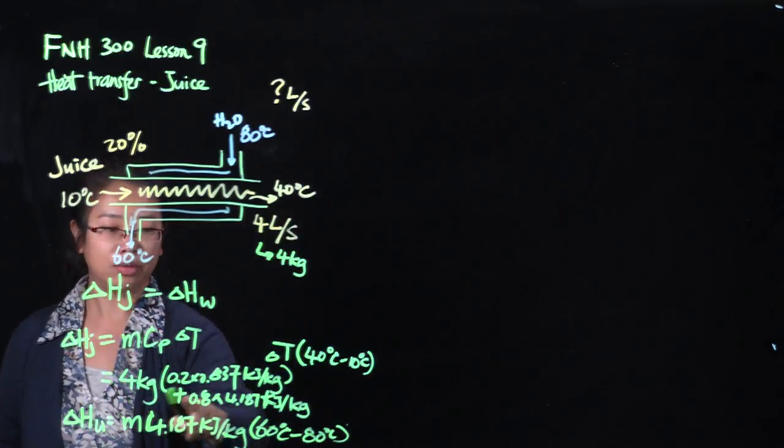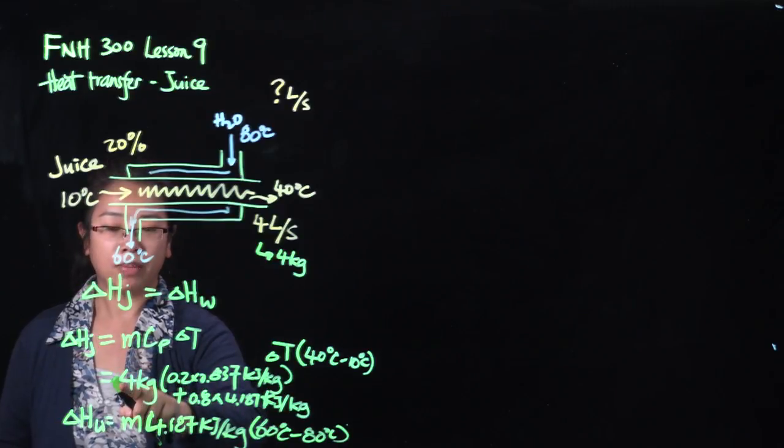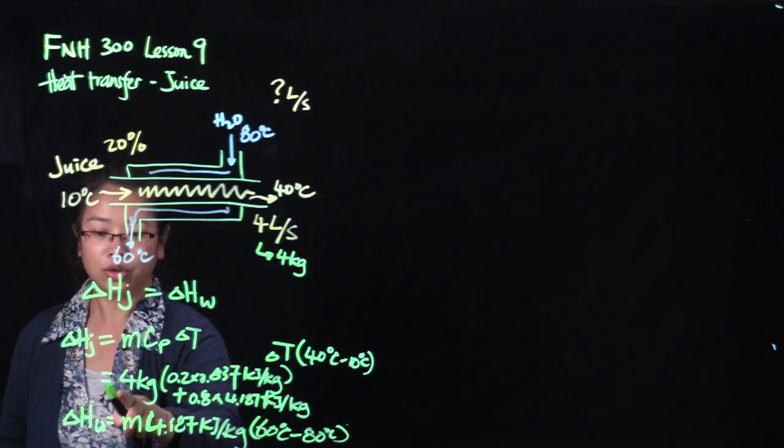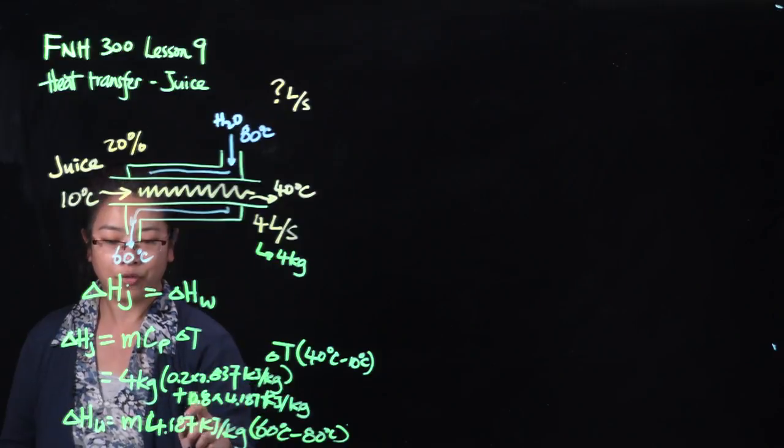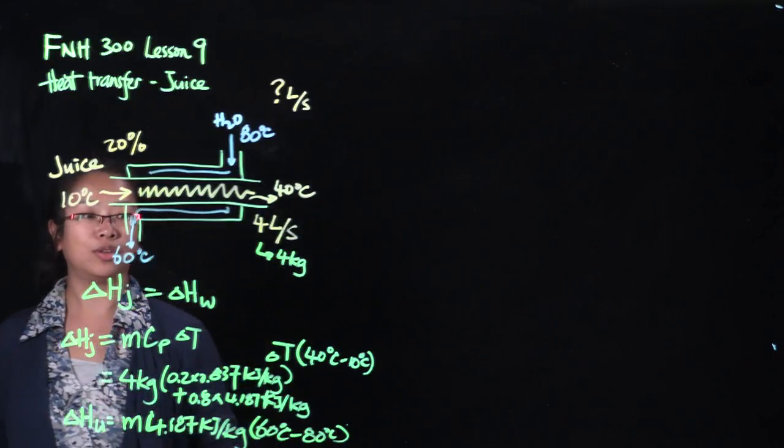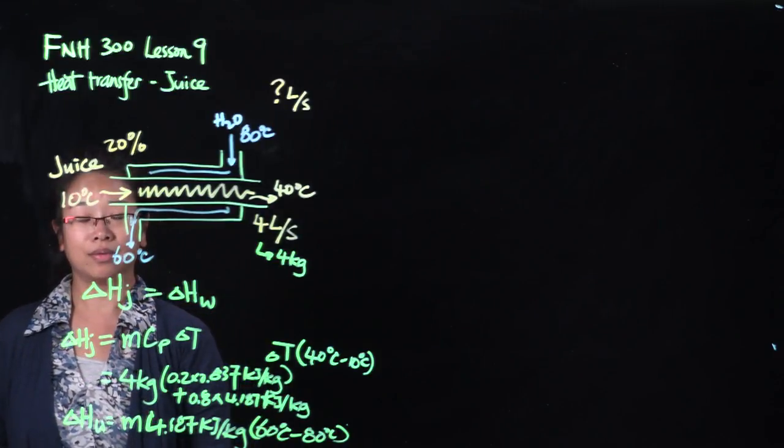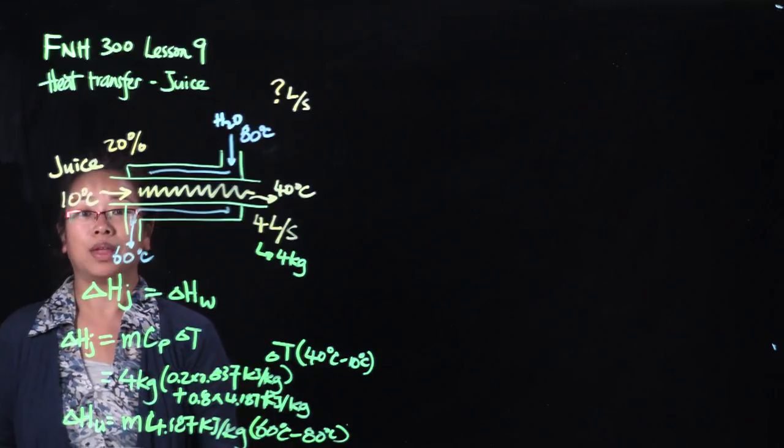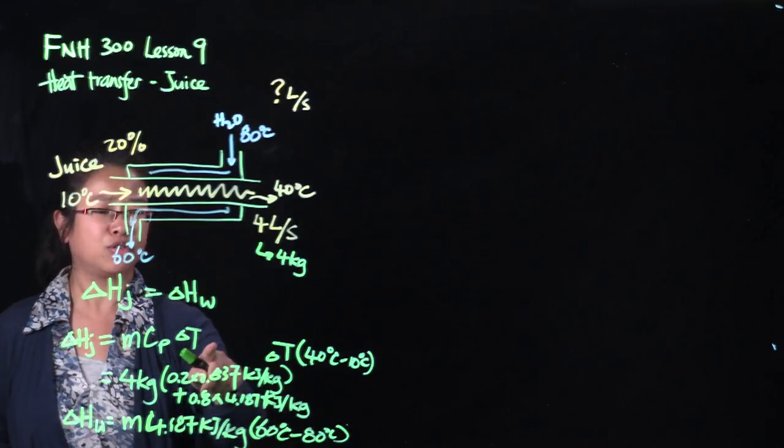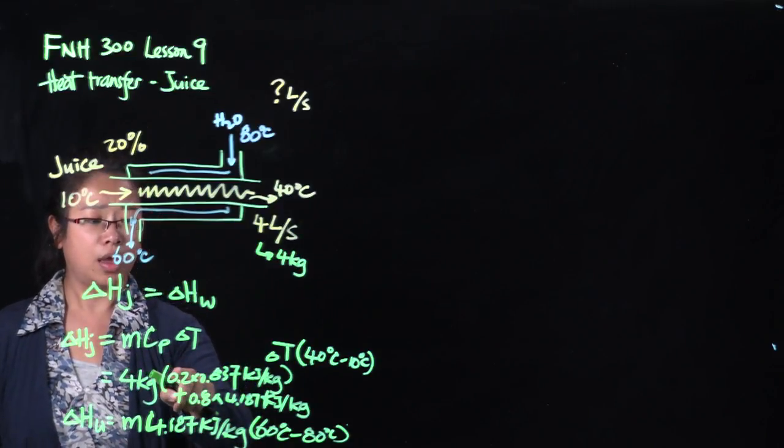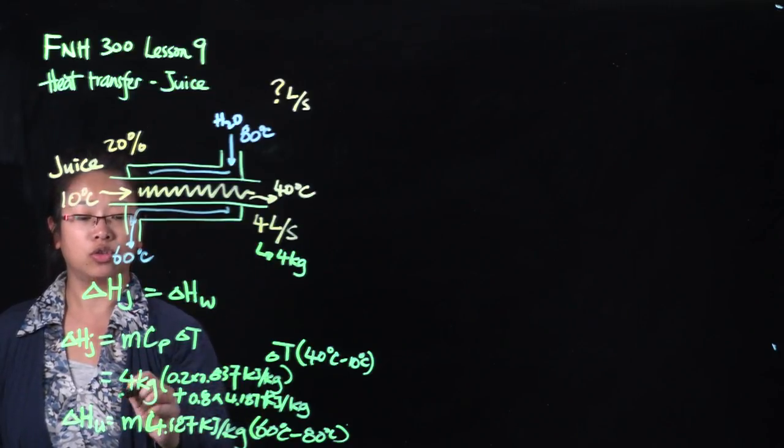We have this equation. Energy gained by the juice equals the energy lost by the water. We have all the variables there. All we need to do is calculate for the mass. And we will assume that it's per second, because we started with per second here for the calculation of the juice.